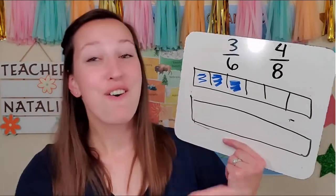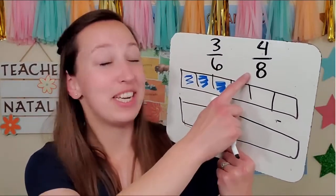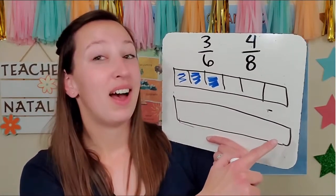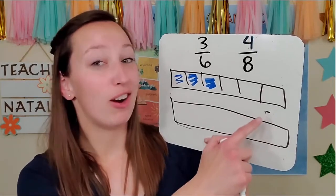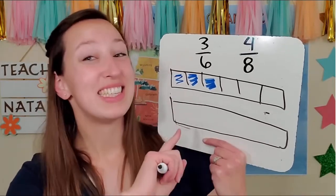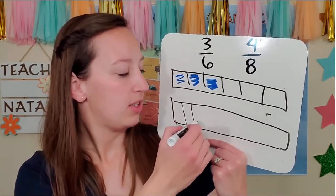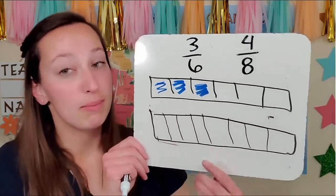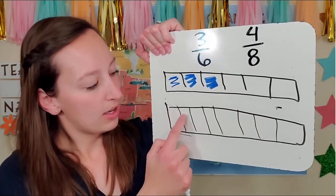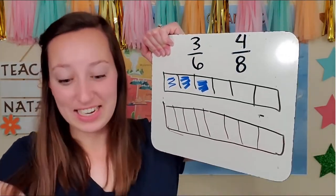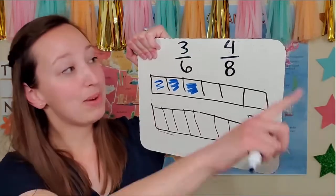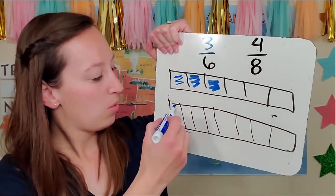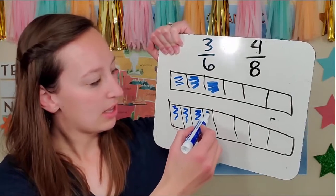My next fraction: four eighths. My denominator is eight. I need eight parts to my whole — not eight lines, eight parts. So I'm going to draw seven lines: one, two, three, four, five, six, seven. Now let's double check my parts — make sure I have enough. One, two, three, four, five, six, seven, eight. I did it right. How many are going to be colored in? My numerator tells me that: four. One, two, three, four.